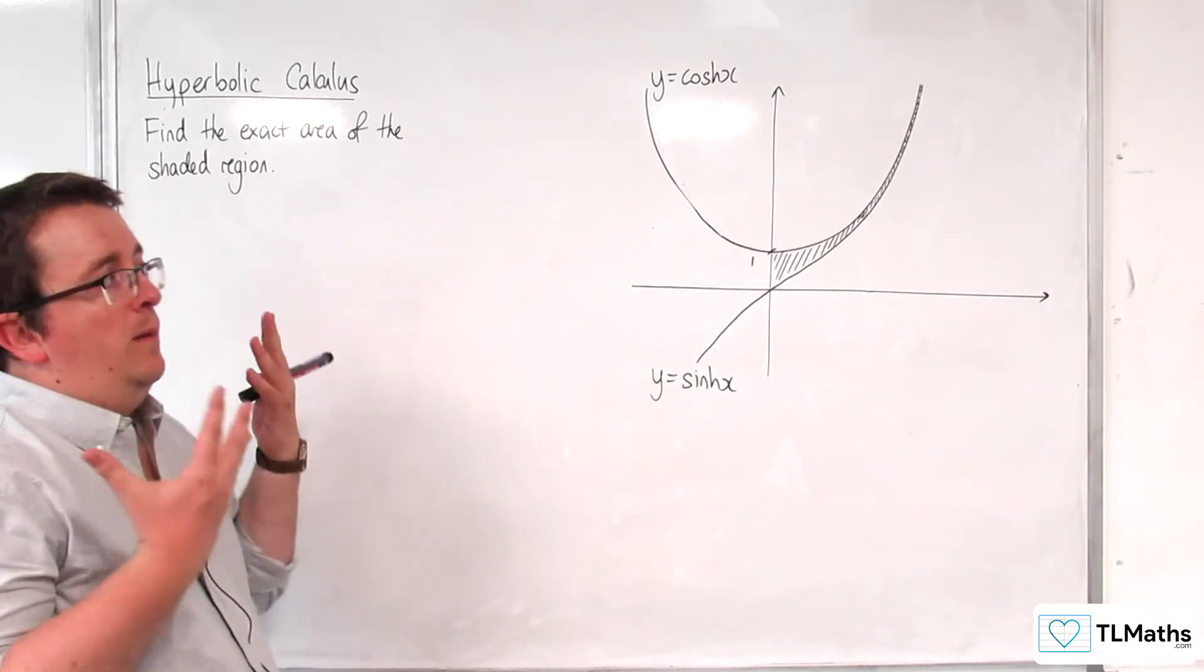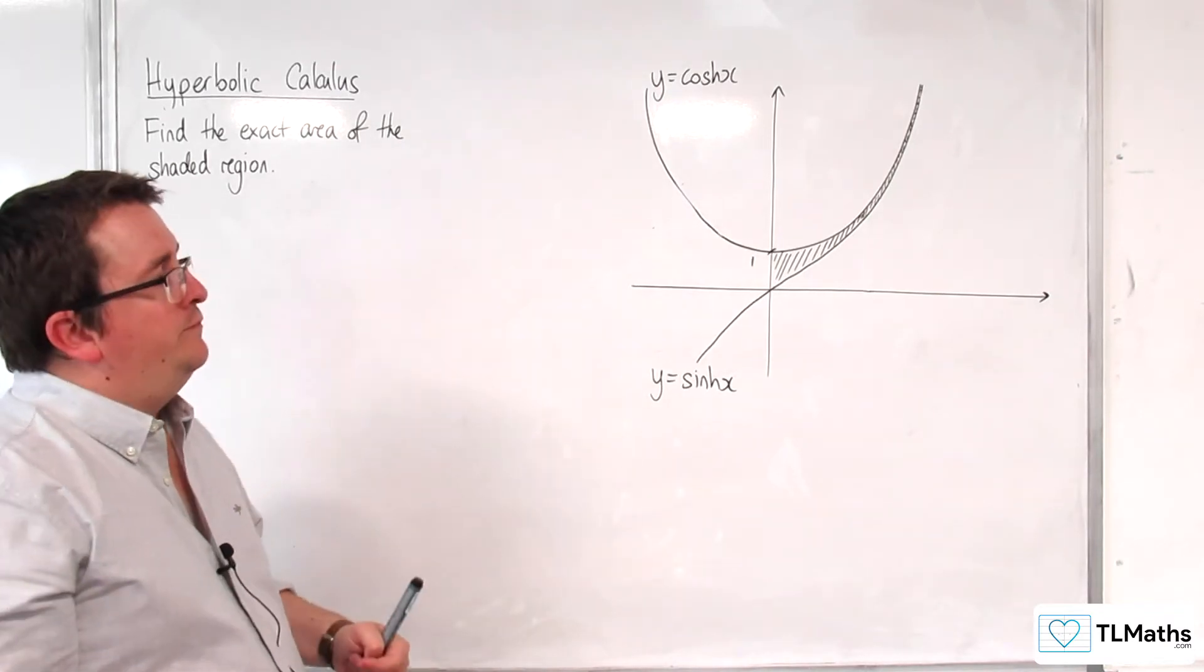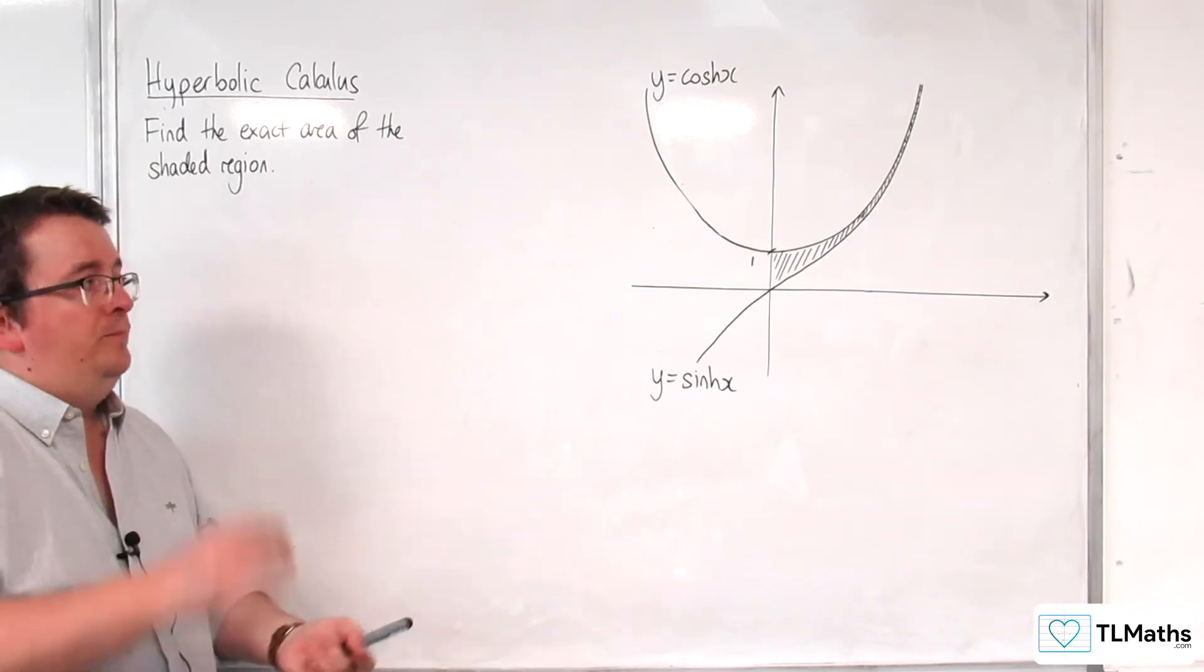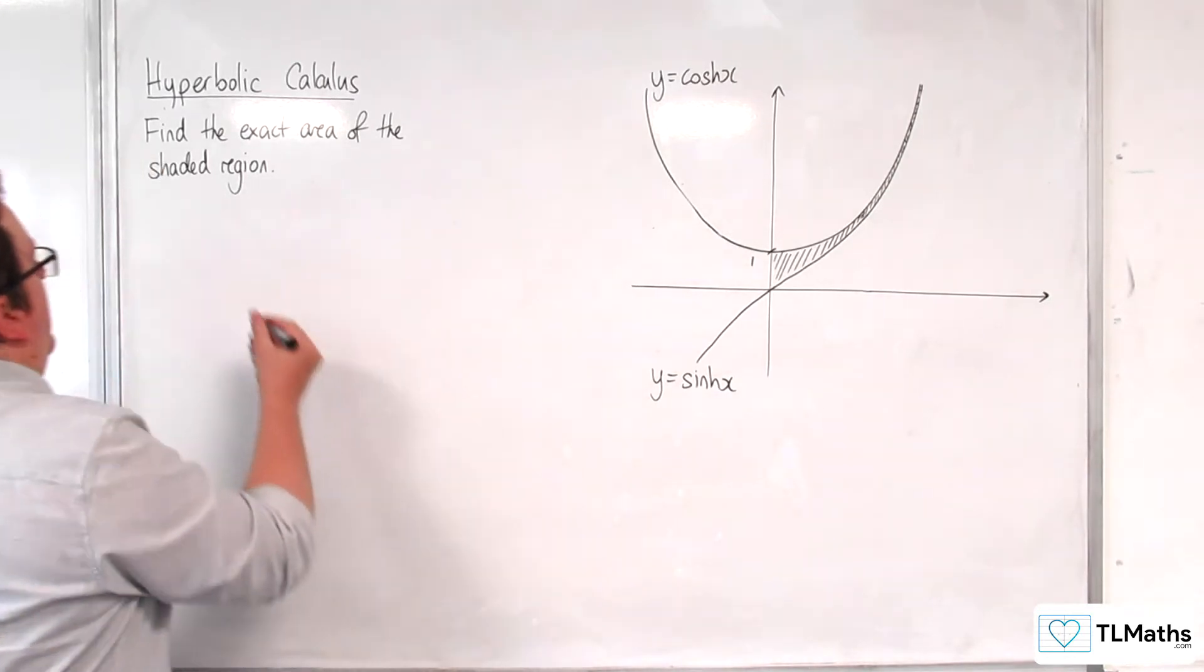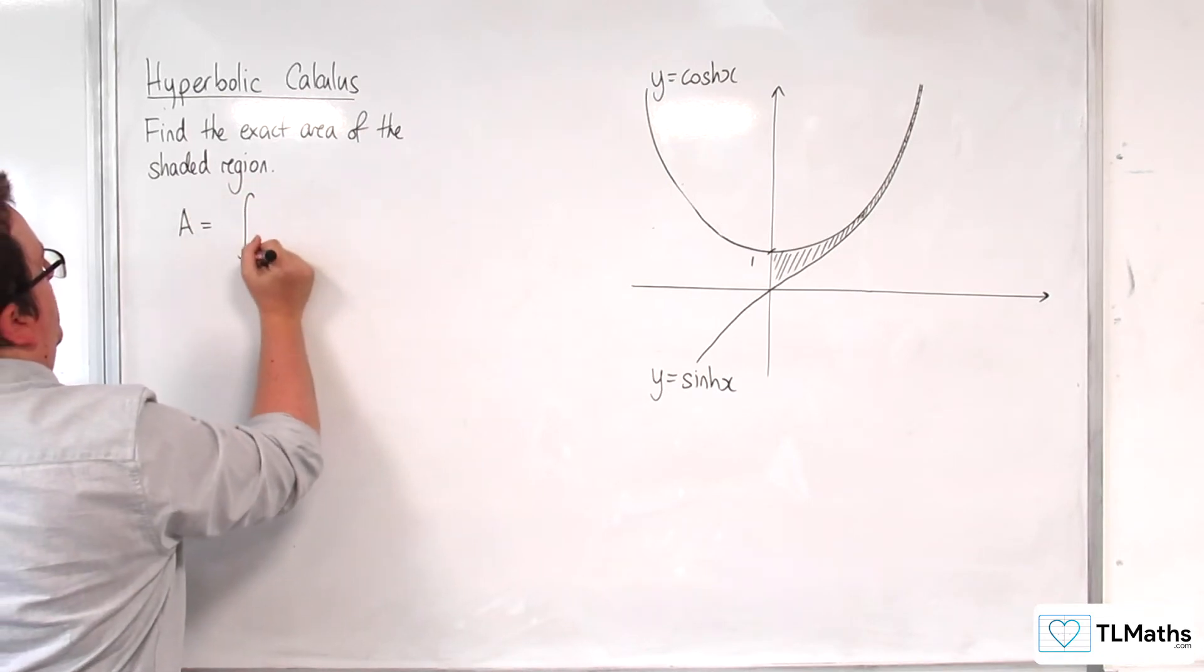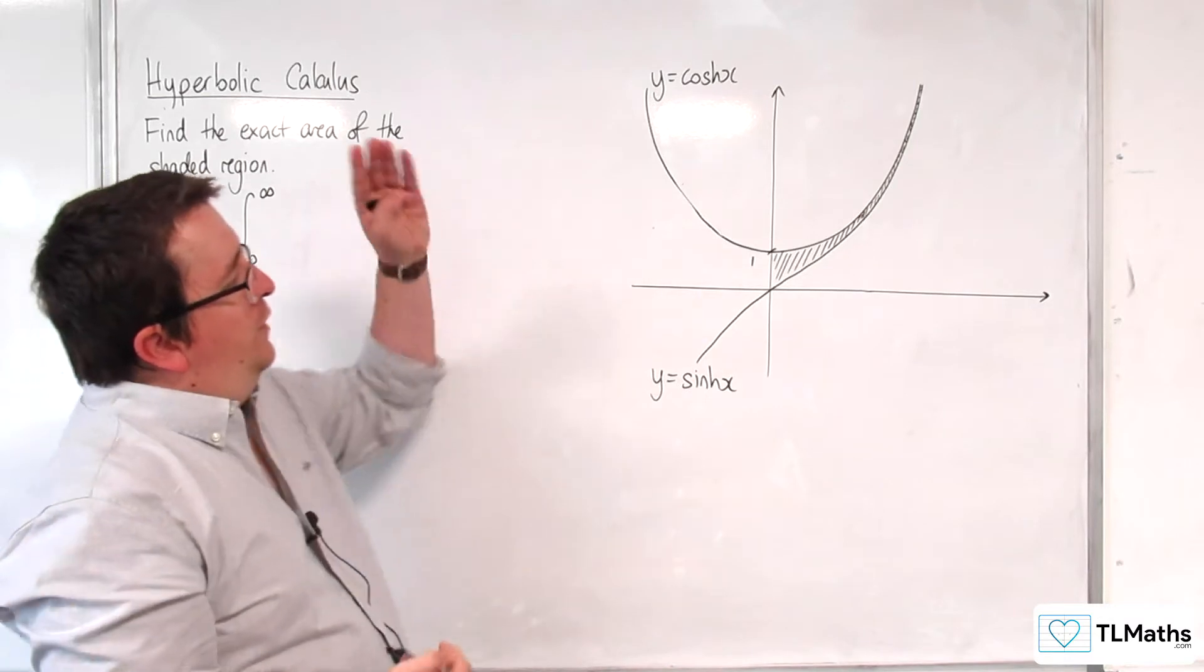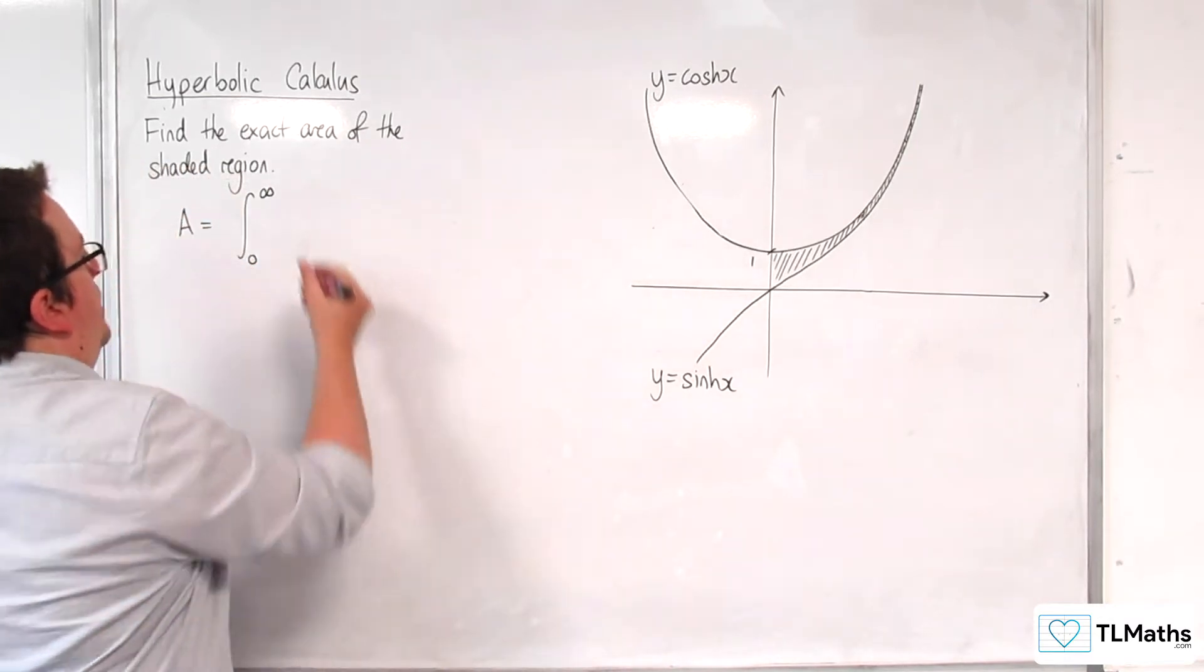So this is becoming an improper integral, because we are going to have infinity as one of the limits of our integral. We are looking for the integral between 0 and infinity of cosh x take away sinh x.